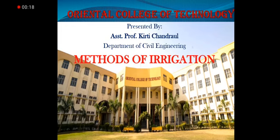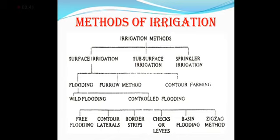In our last session, we saw about irrigation, its necessity, its advantages, and what is the requirement and objective of irrigation. In this session, we are going to see how we can do irrigation with many methods in various locations and according to the site conditions. We are having various types of methods: surface irrigation, subsurface irrigation, and sprinkler irrigation. These are subdivided.